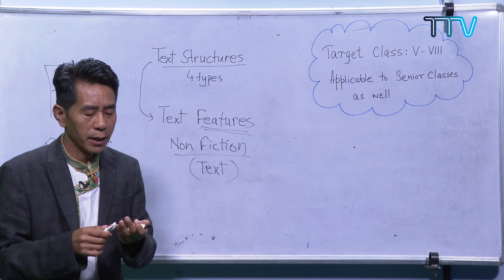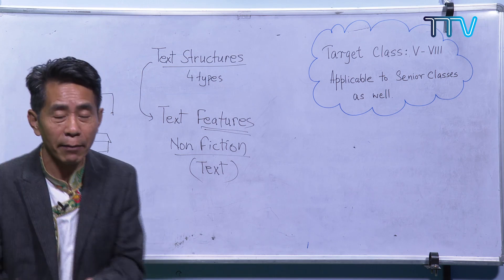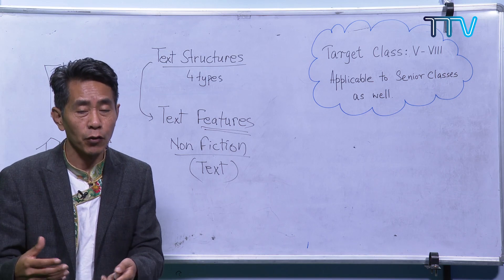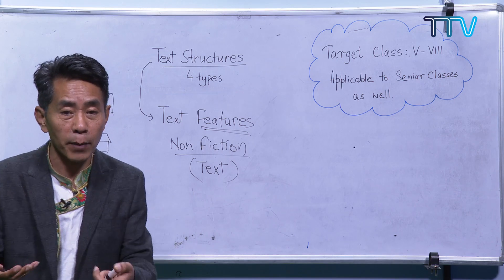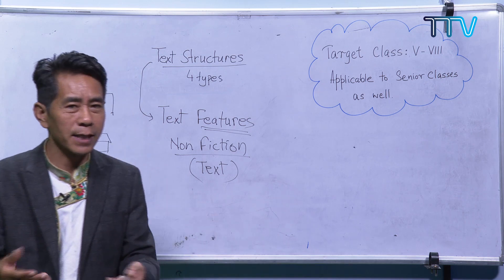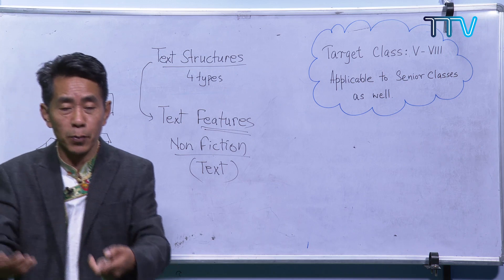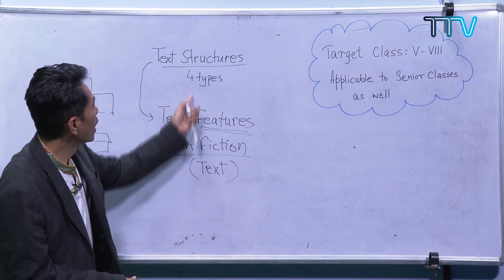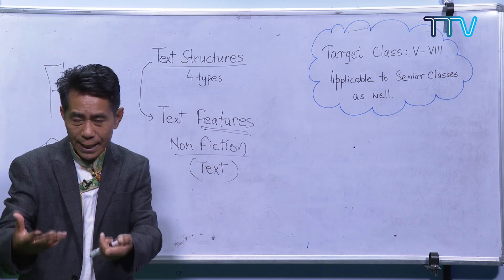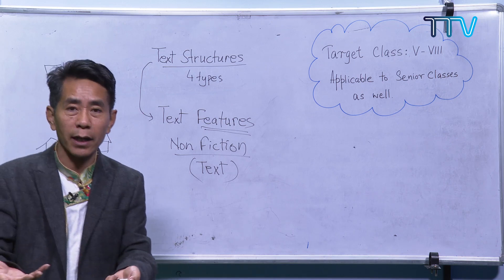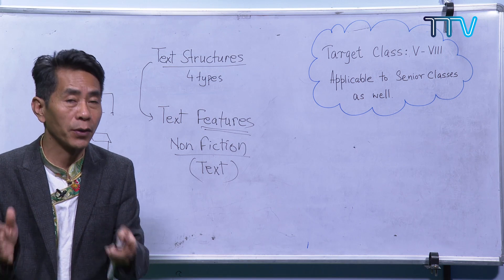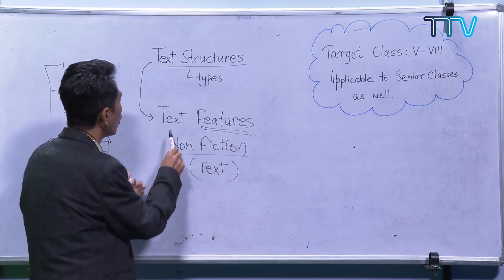When I talk about text features, I want you to remember your time visiting a library where you opened one reference book. You might have read some information about a volcano, national geography, or world war. When you go through reference books and encyclopedias, you will identify different features. In your science and social textbooks, which come in color, you might have seen so many features. These are called text features.